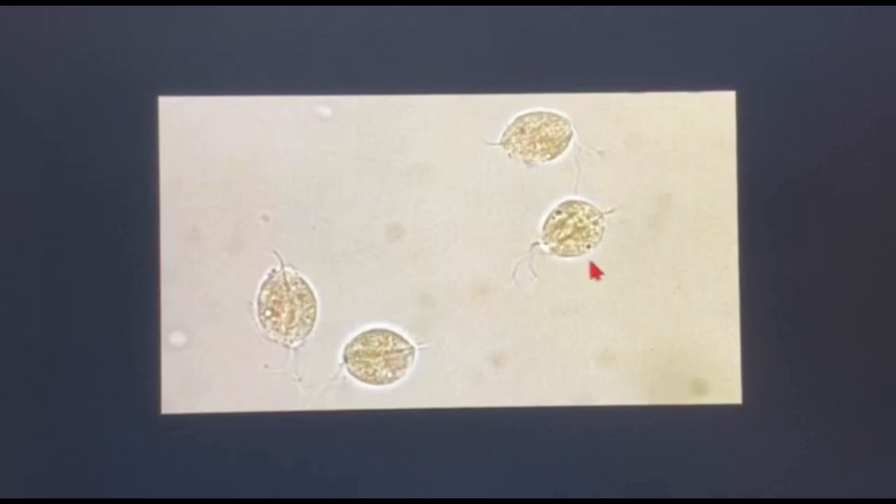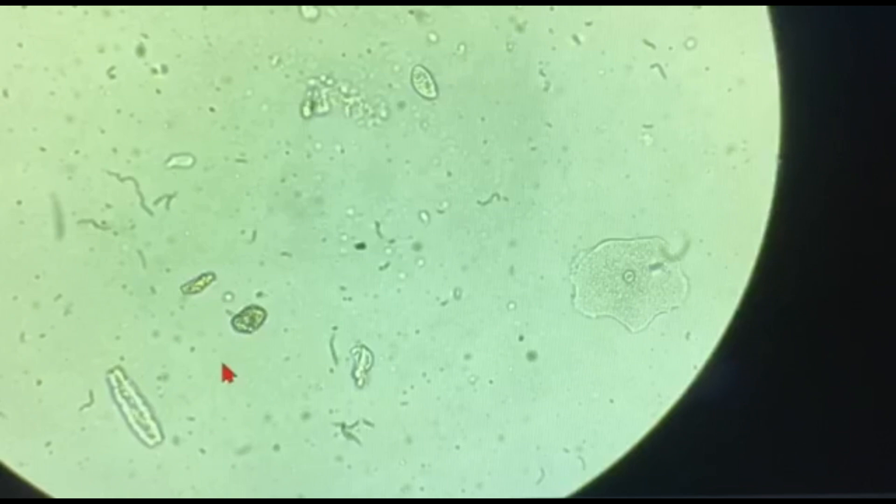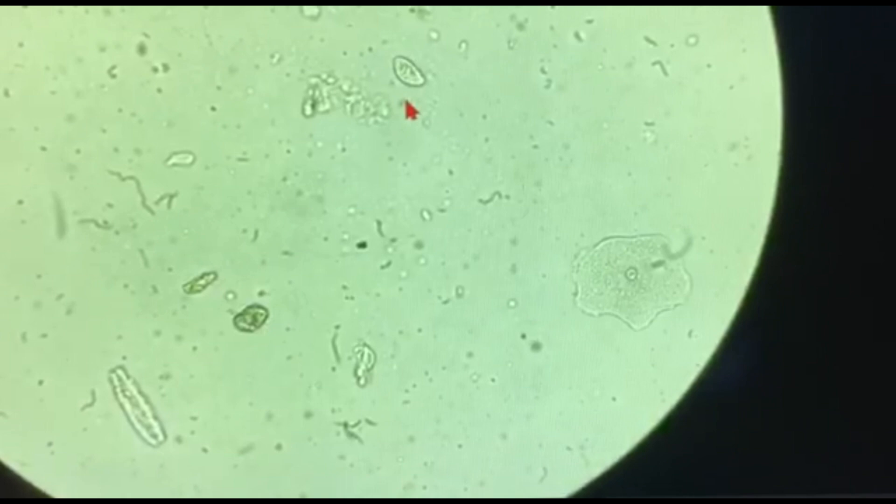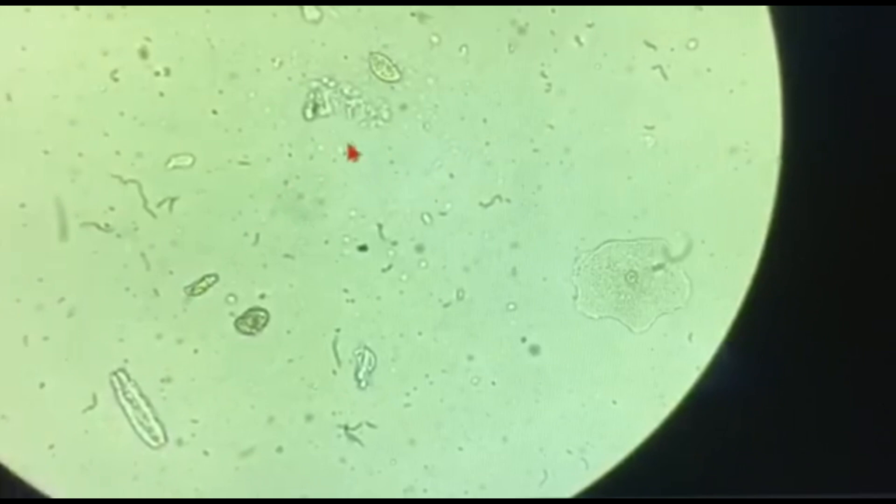Now this is a video of Trichomonas vaginalis that I had taken. This is a wet mount of a urine sample. Observe the jerky movements done by the protozoa. Let me run it again. Can you see the flagella at the top? If you see it properly you can see a very thin faint flagella that comes up there.